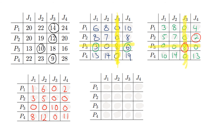Now we once again find the minimum number of lines to cover all the zeros — hopefully it's 4. We draw one line here, one line here, and one line like so. The minimum number of lines is still only 3, so we still can't allocate.